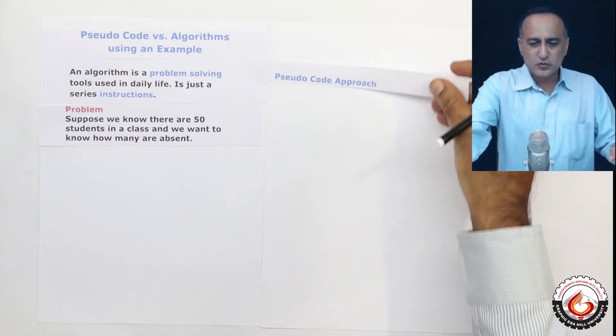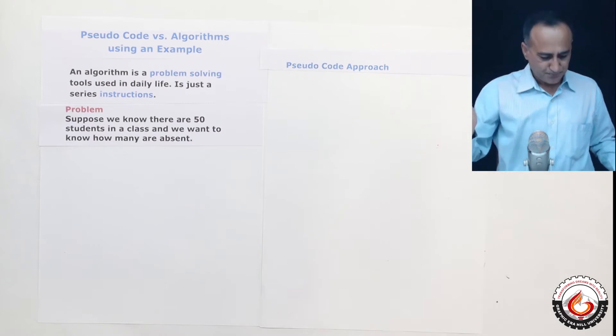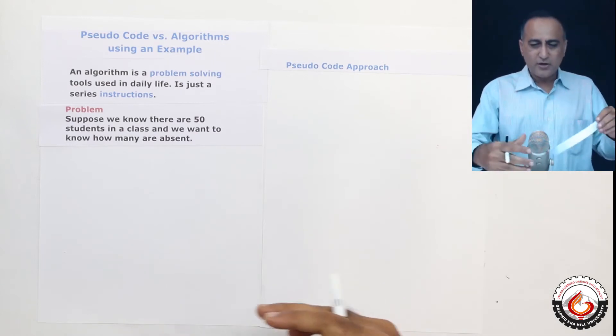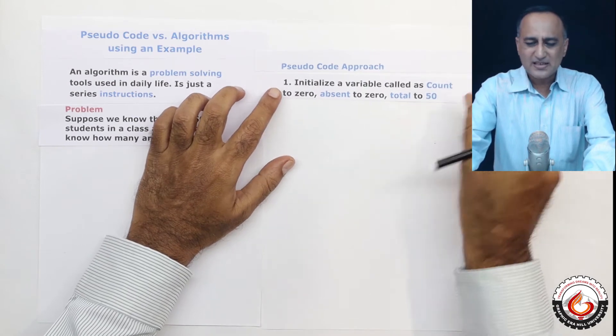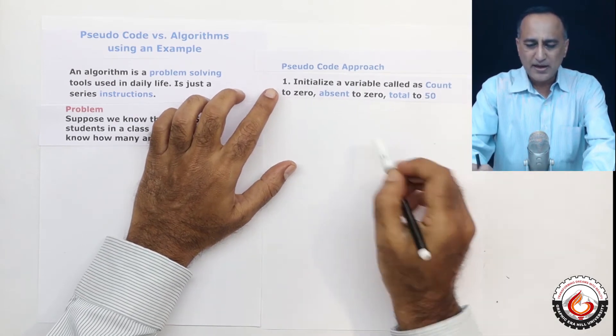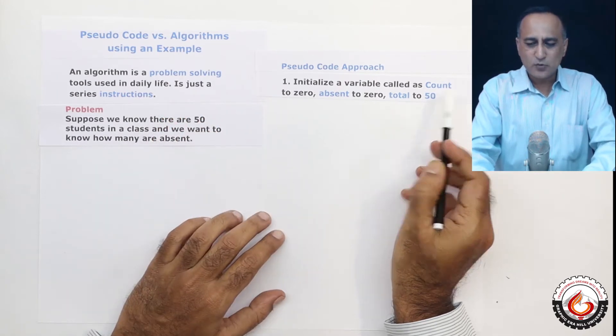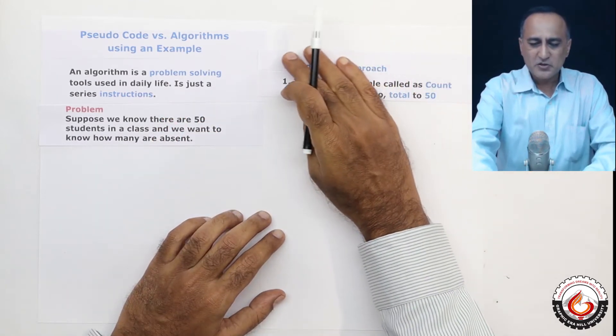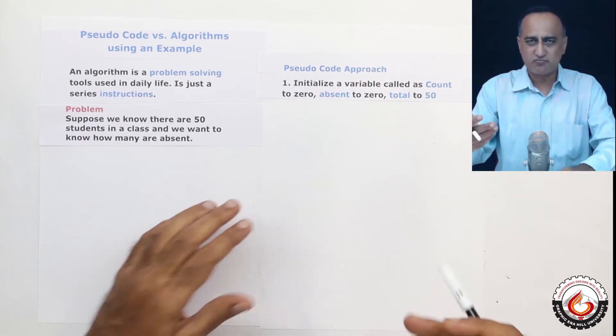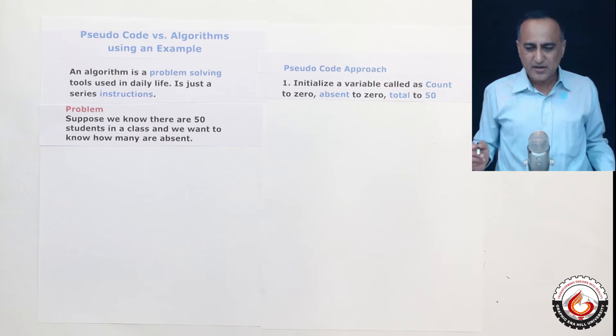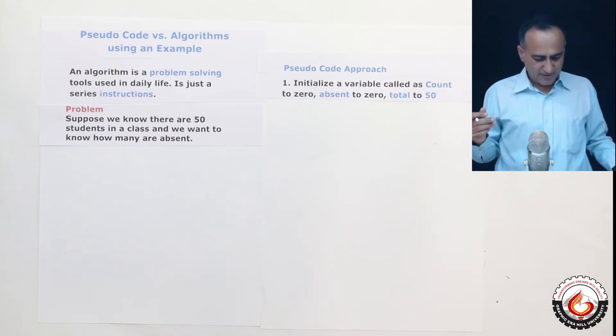So if you have to take a look at the pseudocode approach, let's run through the logic here. Initially, what I will do is I will say initialize a variable called count to zero, absent to zero and total to 50. This count will tell me how many students are present in the class. Initially it is zero because we have not started counting yet.